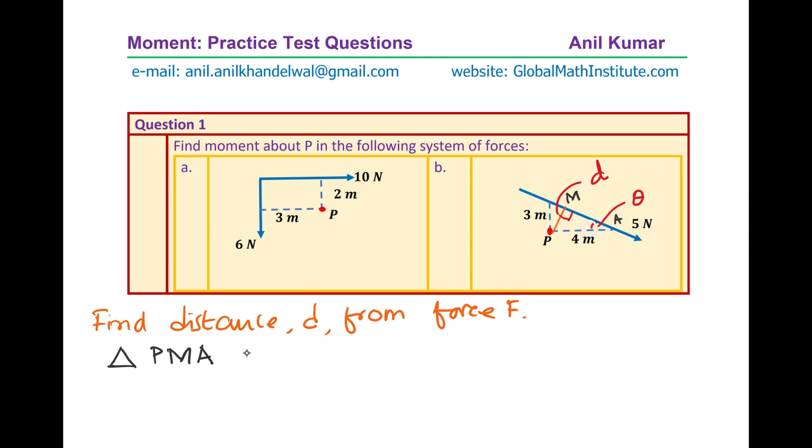So we can actually relate PM within this triangle as sine theta. In this particular triangle we know that sine theta is equal to opposite side PM over the hypotenuse PA. Now from here we know that PM, the shortest distance d, is basically equal to PA which is 4 sine theta. But what is sine theta? We don't know what angle theta is. So that means we should find the angle theta.